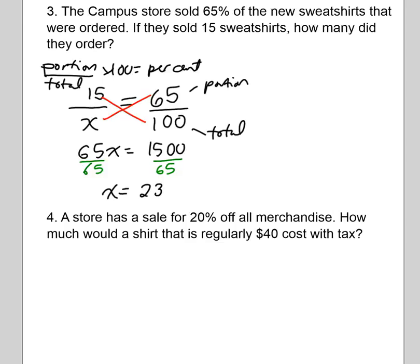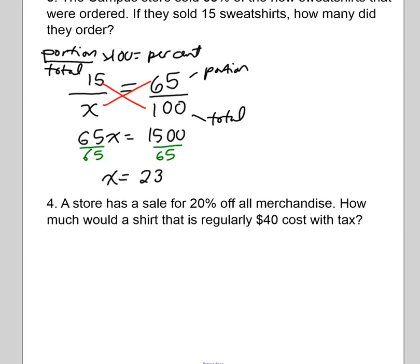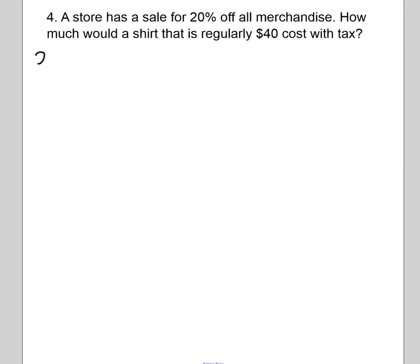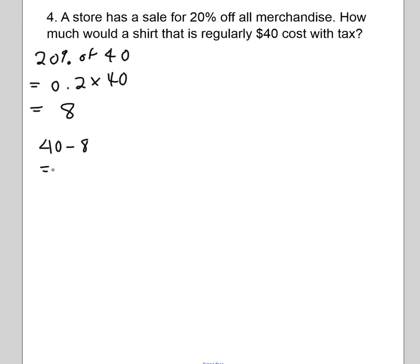There's a sale for 25 percent off all merchandise. How much would a shirt cost if it's regularly $40, including tax? First, we figure out how much we're actually paying for that shirt. One way: find 20 percent of $40 — turn it into a decimal and multiply — and you get $8. But that doesn't mean you're paying $8 for the shirt. The $8 is the discounted amount. To get the sale price, you do $40 minus the discounted amount of $8.